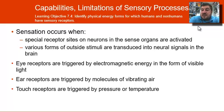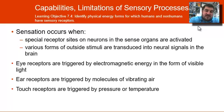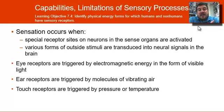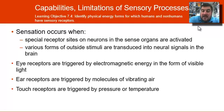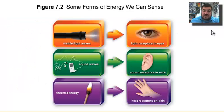Sensation occurs when the special receptor sites on neurons are activated and various forms of outside stimuli are transduced into neural signals in the brain. Eye receptors are triggered by electromagnetic energy in the form of visible light, ear receptors are triggered by molecules of vibrating air, and touch receptors are triggered by pressure or temperature.